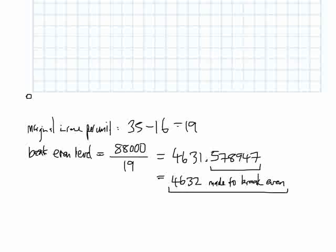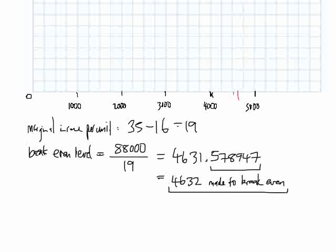We have 26 grid lines and we need to fit around 5,000 on the x-axis. So let's go up in 1,000s for every 4 boxes: 1,000, 2,000, 3,000, 4,000, 5,000. Our break-even point at 4,632 is going to fall somewhere around the 4,500 to 5,000 range. As long as your graph scale covers that, you're fine. That's the x-axis decided.